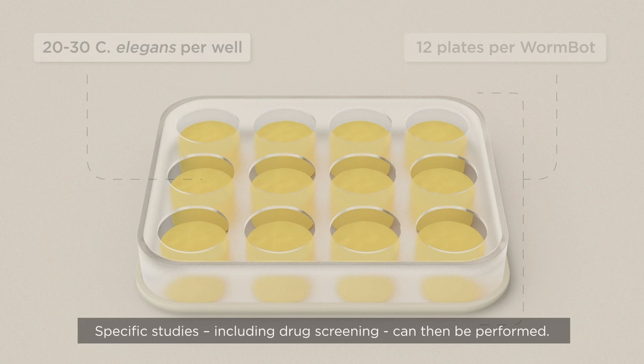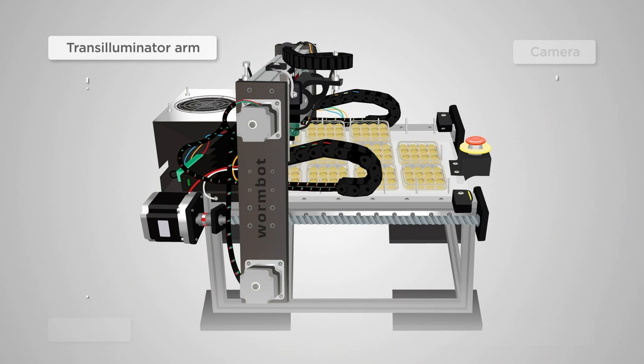C. elegans is cultured in growth medium in a standard 12-well tissue culture plate. Specific studies, including drug screening, can then be performed.